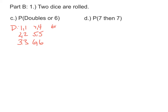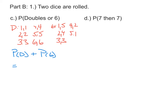Then think of all the ways we can get a 6: that's with a 1 and 5, 2 and 4, 3 and 3, 4 and 2, or 5 and 1. To calculate the probability of doubles or a 6, we add the probability of doubles — 6 outcomes out of 36 — plus the probability of 6's, which is 5 outcomes out of 36.